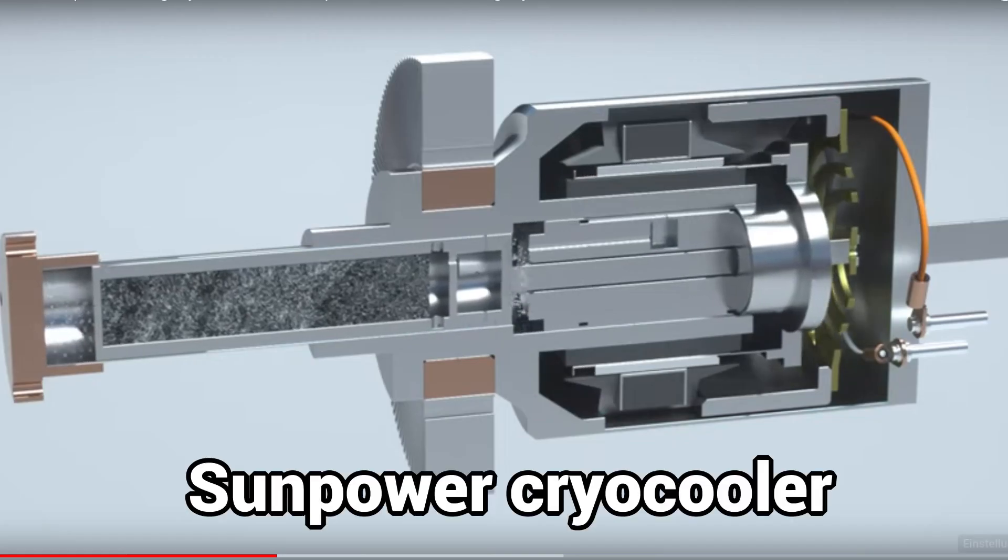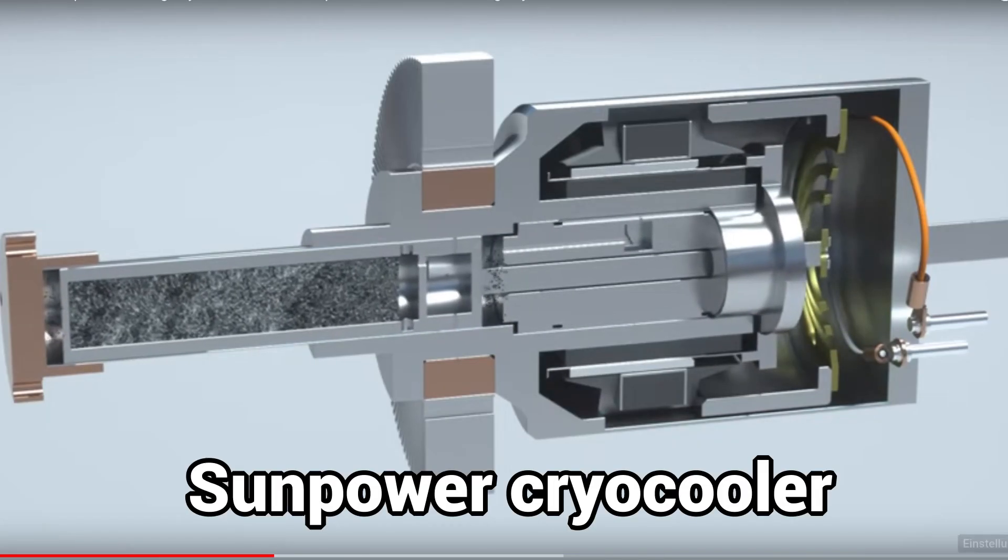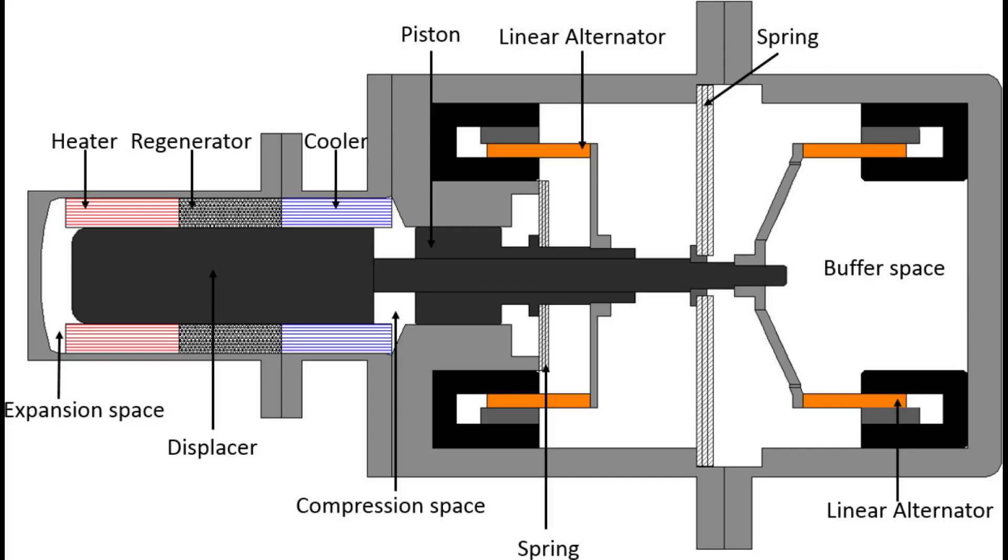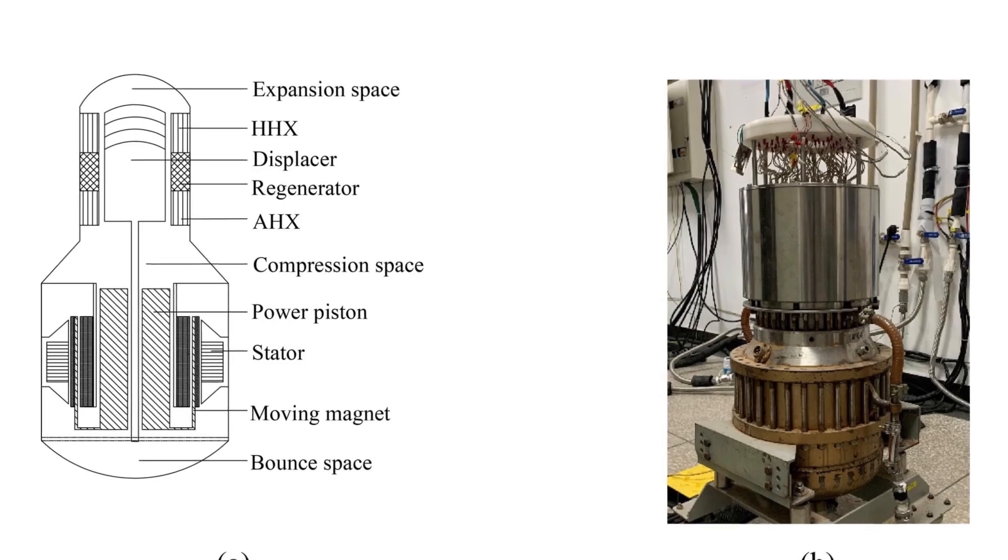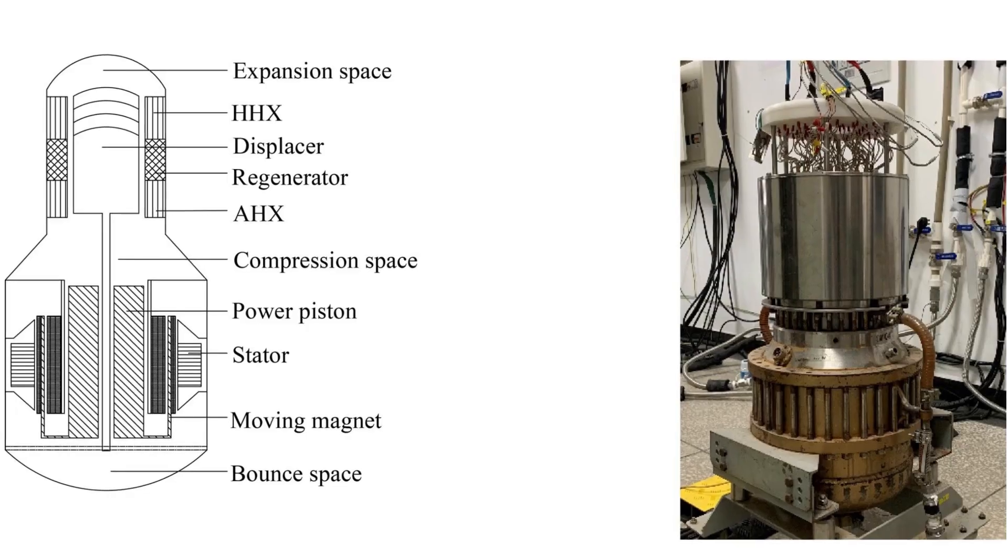Nowadays, free piston engines are mainly used as refrigeration machines and cryogenic systems. Free piston Stirling engines have no kinematic mechanism coupling the reciprocating elements to each other or to a common rotating shaft. This eliminates the need for bearings and simplifies the engine to a great extent.